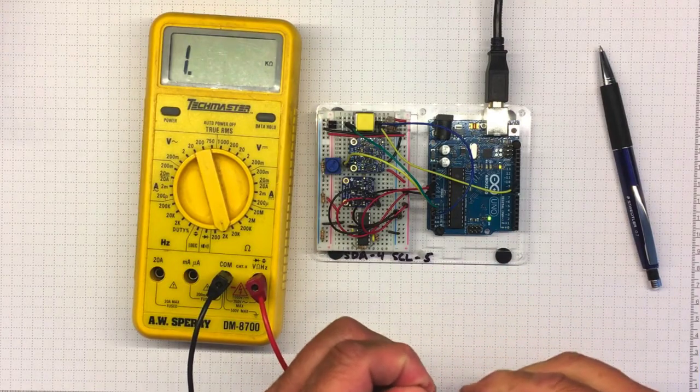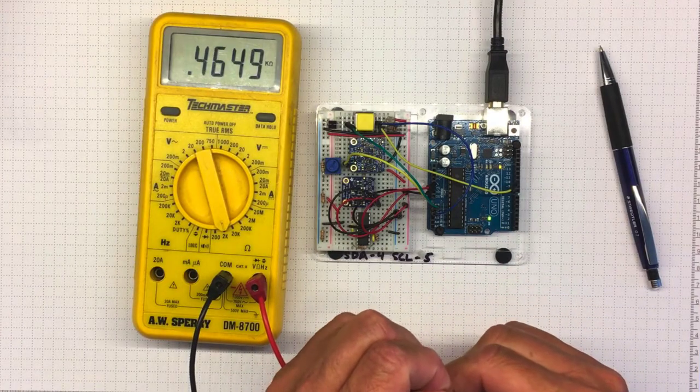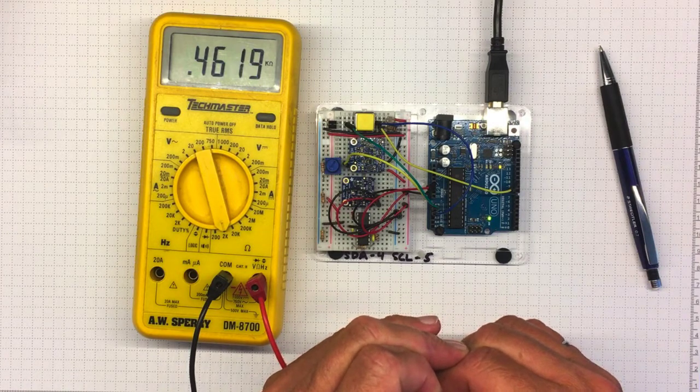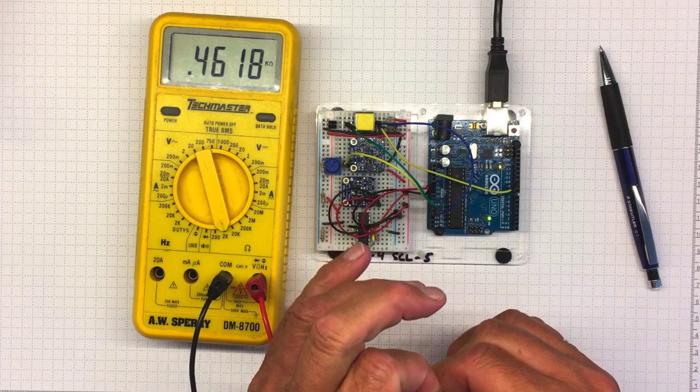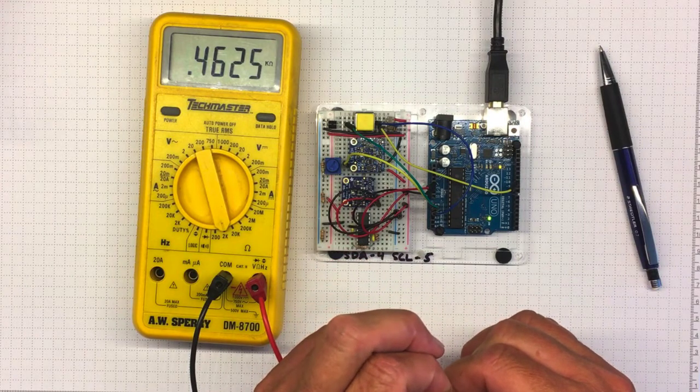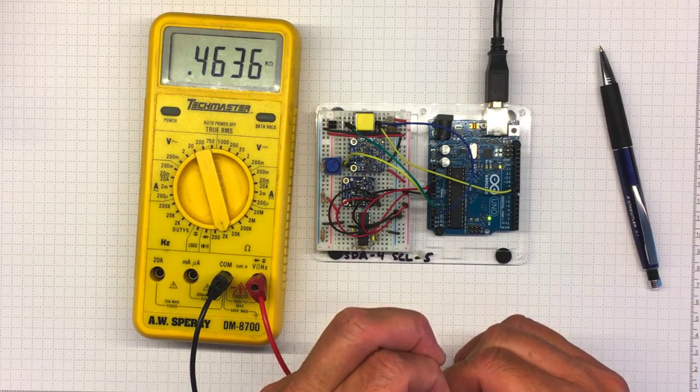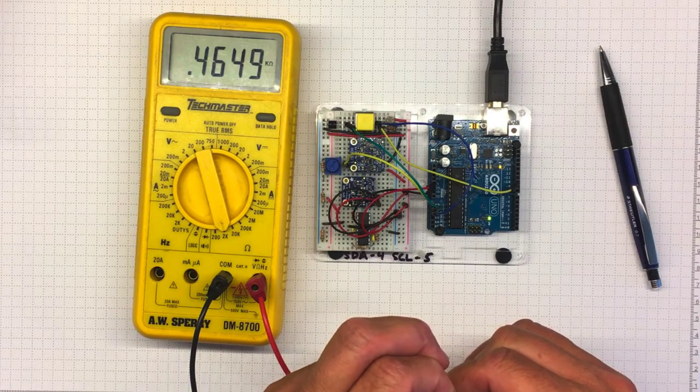If I hold that between my fingers like this, I still get very close to the same resistance value. So as long as I'm not measuring really high resistances, the resistance of my body doesn't really show up as much at all.